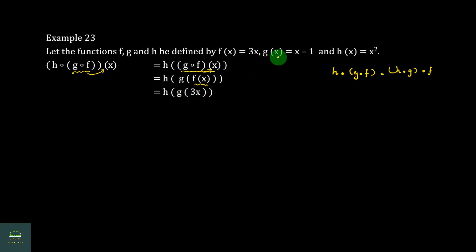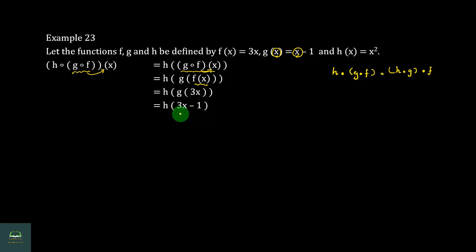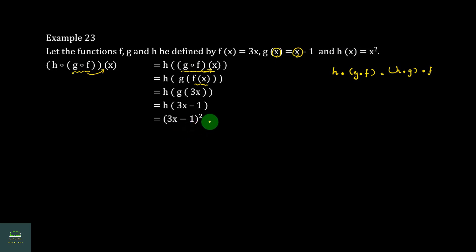Starting with f(x) = 3x. Then g∘f: g of 3x = 3x minus 1. Then h∘(g∘f): h of (3x minus 1) = (3x minus 1) whole squared.